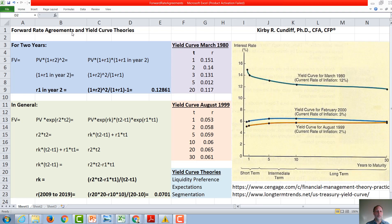In this video we will discuss forward rate agreements and yield curve theories. There are three primary yield curve theories: the liquidity preference theory, the expectations theory, and the segmentation theory.